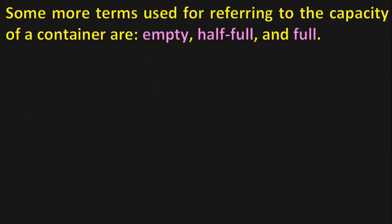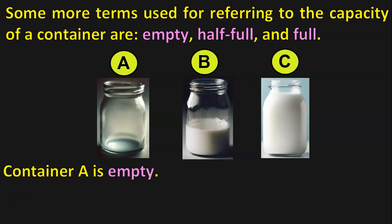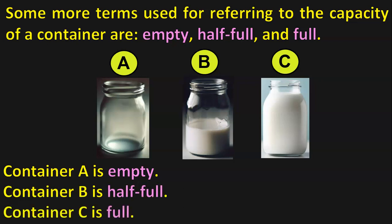Some more terms used for referring to the capacity of a container are empty, half full and full. Let us take three containers and name them as A, B and C. Container A is empty — empty means it does not have anything. Container B is half full. And container C is full with milk. So the terms we saw here are less and more, empty, half full and full.